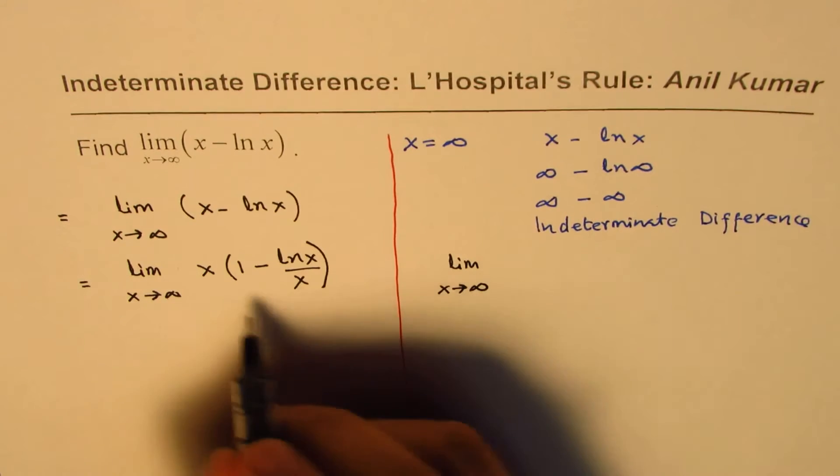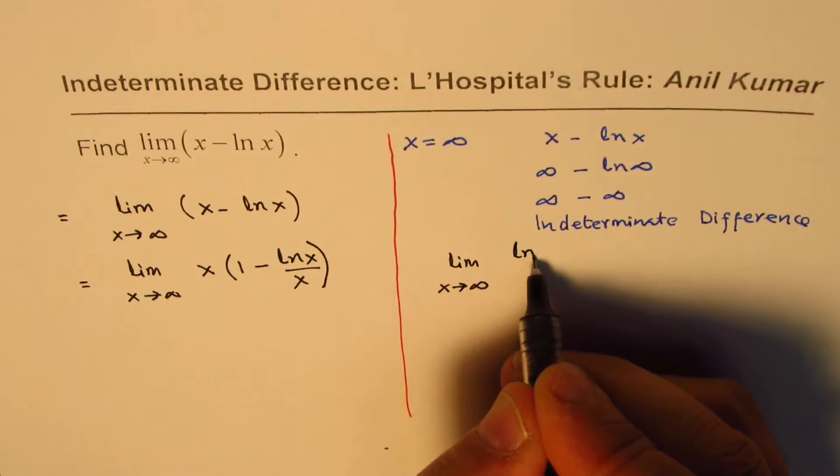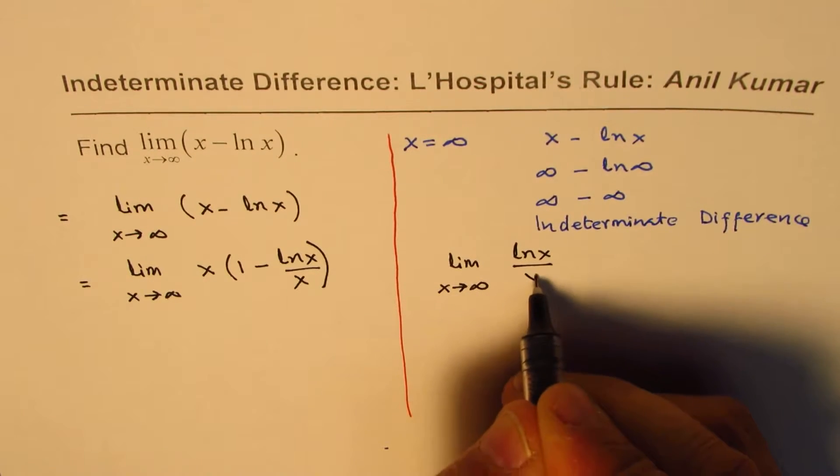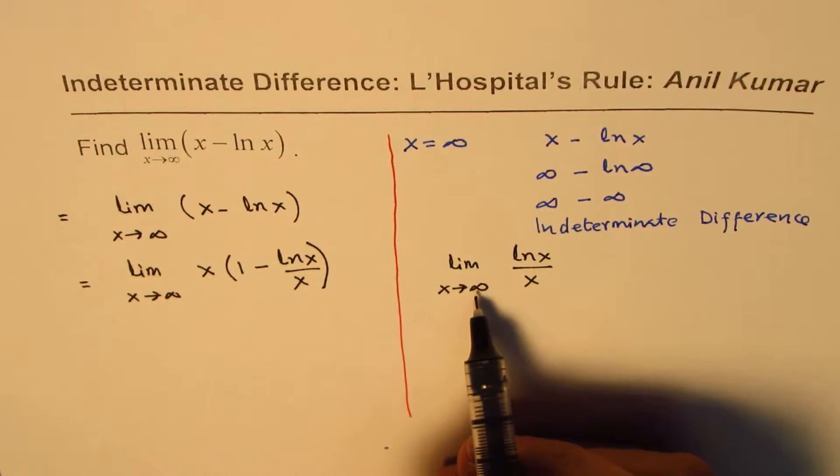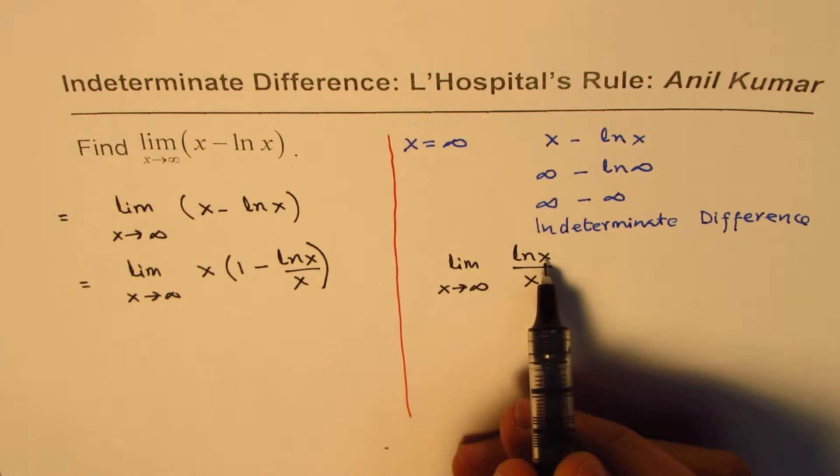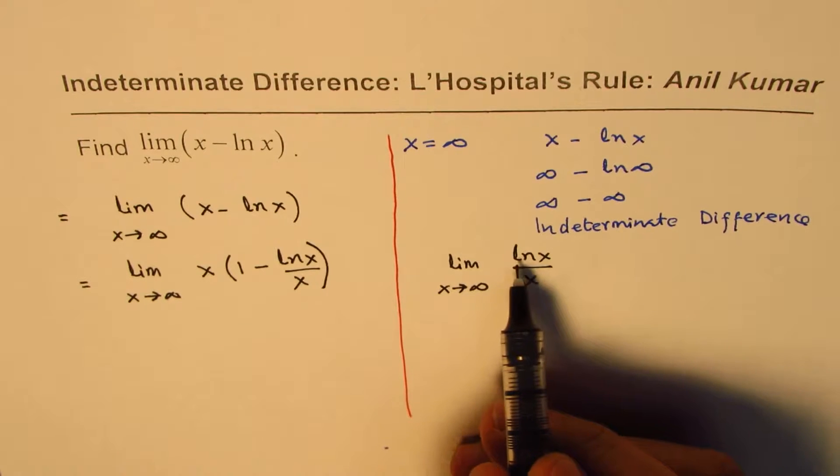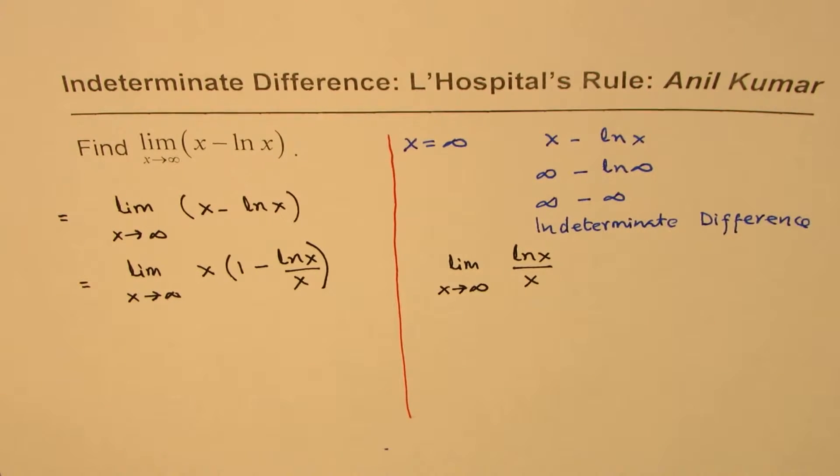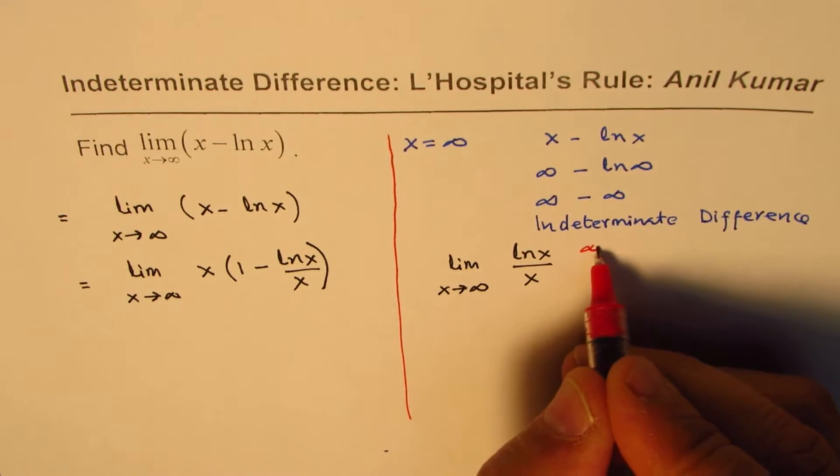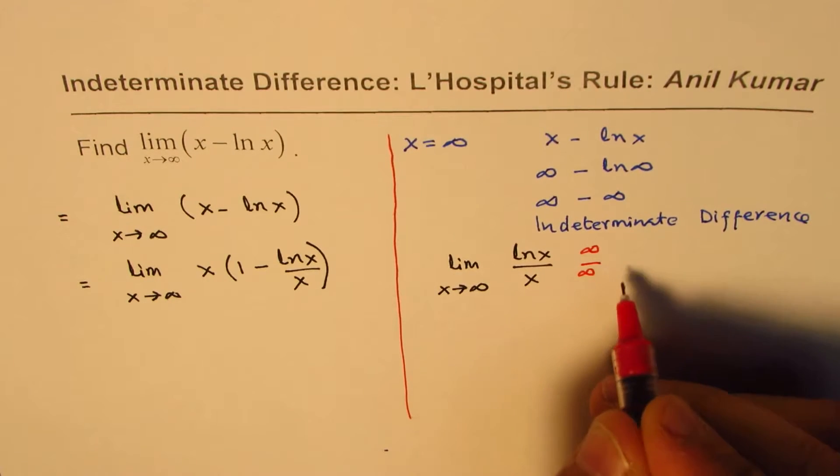Now here if I substitute x as infinity, then ln x is infinity and x is also infinity. So this is definitely a case of infinity over infinity, so we can apply L'Hôpital's rule.